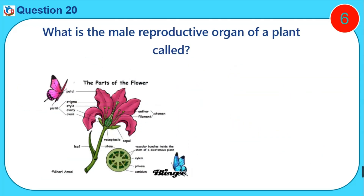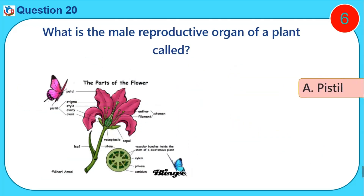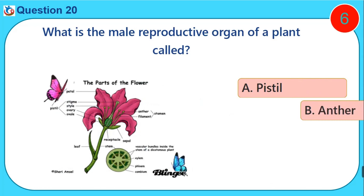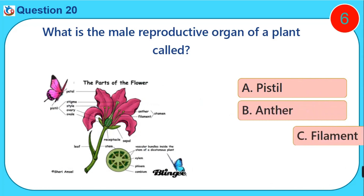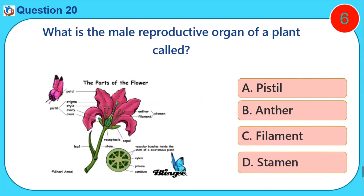What is the reproductive organ of a plant called? A. Histio. B. Anther. C. Filament. D. Stamen.